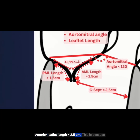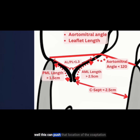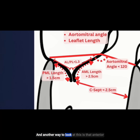Anterior leaflet length greater than 2.5 centimeters is a risk factor because when you have redundant anterior leaflet tissue, there is a redundant amount of tissue more likely to flop into that left ventricular outflow tract. A posterior leaflet length greater than 1.5 centimeters is relevant because a longer posterior leaflet pushes the coaptation point towards the LVOT, whereas a shorter leaflet pushes that coaptation point more posteriorly away from the LVOT. Another way to look at this is an anterior leaflet height to posterior leaflet height ratio less than 1.3.